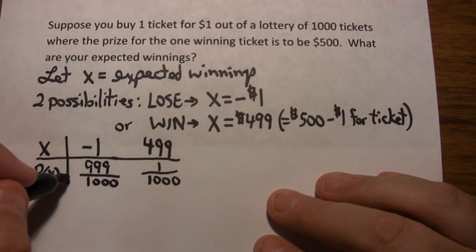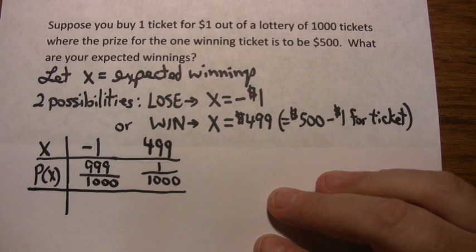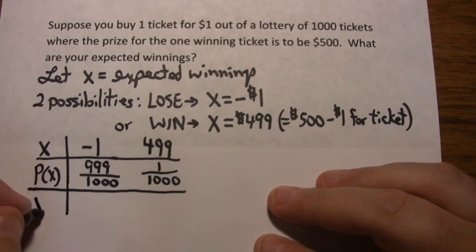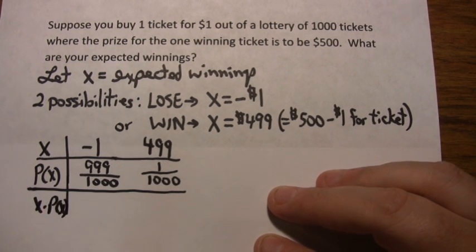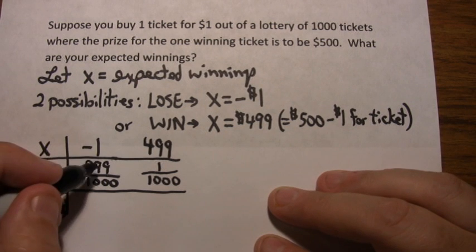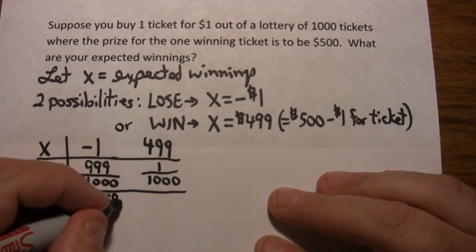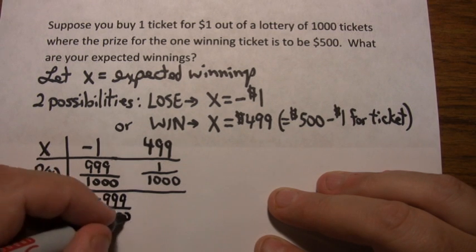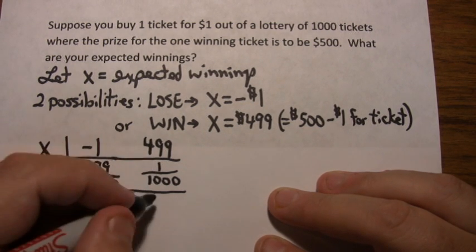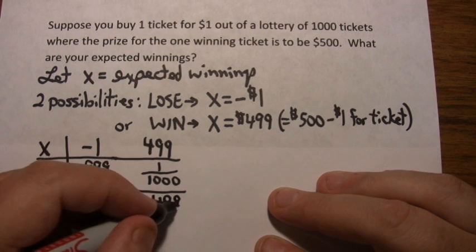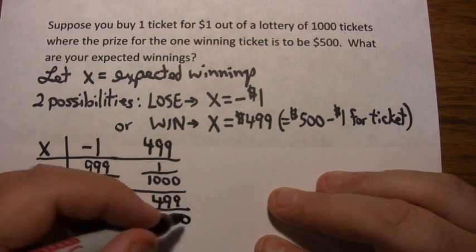When you're calculating an expected value of a random variable, which is the product of X times P of X, you get negative 1 times 999 over 1,000 would be negative 999 over 1,000. And then 499 times 1 over 1,000 is 499 over 1,000.